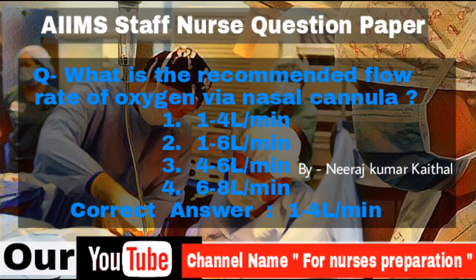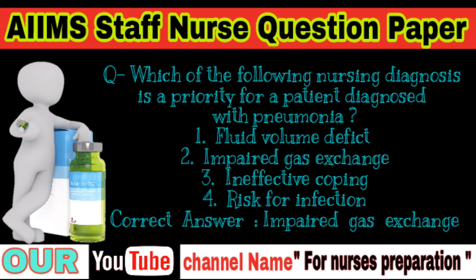Question: What is the recommended flow rate of oxygen via nasal cannula? Options: 1 to 4 L/min, 1 to 6 L/min, 4 to 6 L/min, 6 to 8 L/min. Correct answer is 1 to 6 liters per minute. Question: Which of the following nursing diagnoses is a priority for a patient diagnosed with pneumonia? Options: Fluid volume deficit, Impaired gas exchange, Ineffective coping, Risk for infection. Correct answer is Impaired gas exchange.